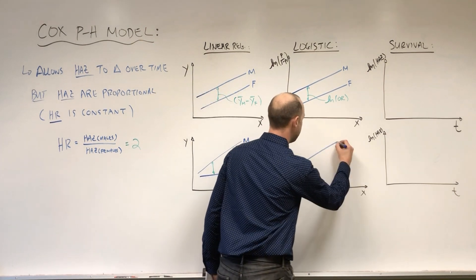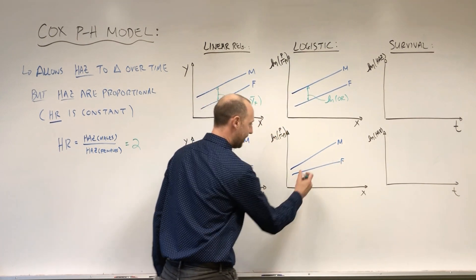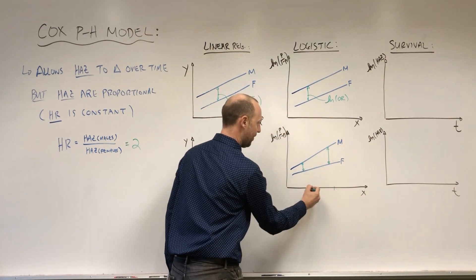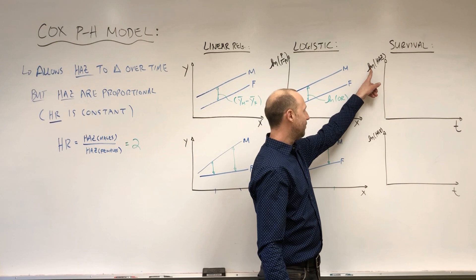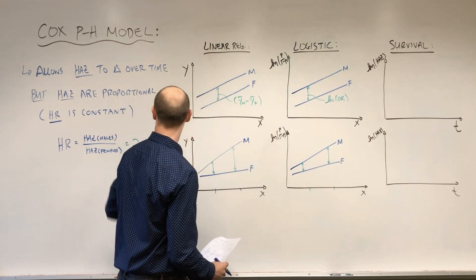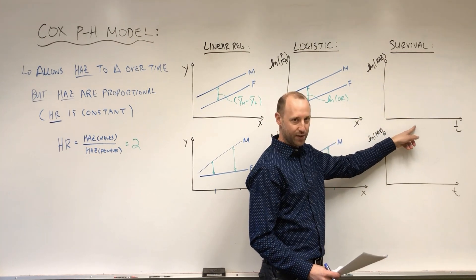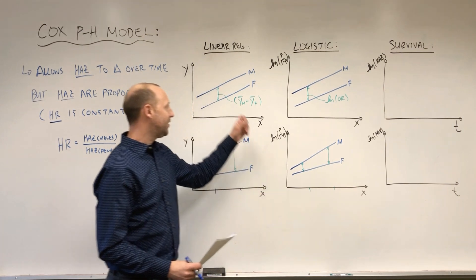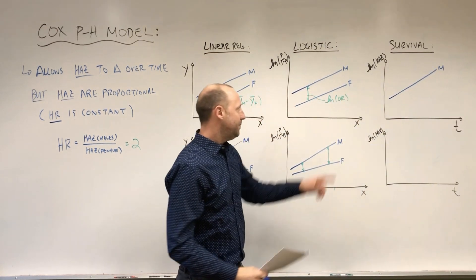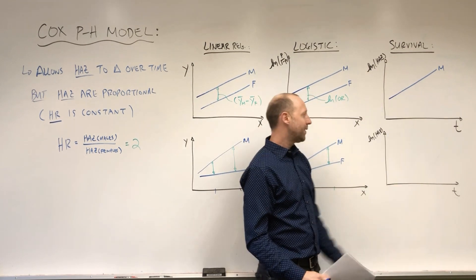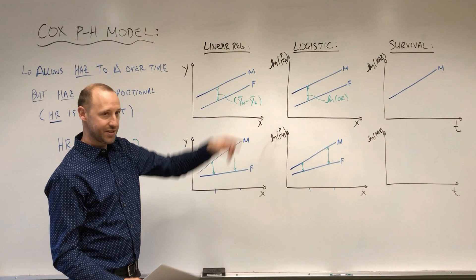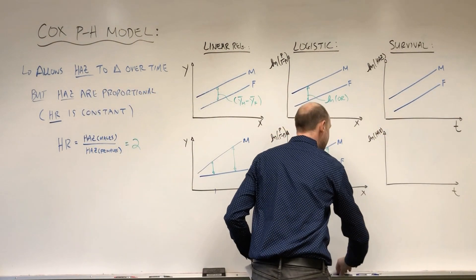Looking at survival, we're modeling the log hazard as a function of x variables. The Cox proportional hazards model allows the hazard to change over time — it can fluctuate up and down — but for the sake of connecting to previous knowledge, I'm going to draw it as a straight line. We're showing the log hazard is allowed to change over time. We fit a line for males and females, and the distance between them is the log hazard ratio.